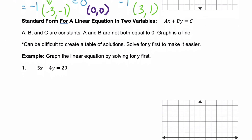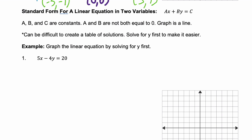The standard form for a linear equation in two variables is ax plus by equals c, where a, b, and c are all constants — remember, a constant is a number — and a and b are not both equal to zero; one of them can be zero, but not both. This graph is a line. This standard form can be difficult to create a table of solutions from, so it's easiest if you solve for y first.